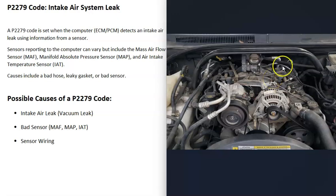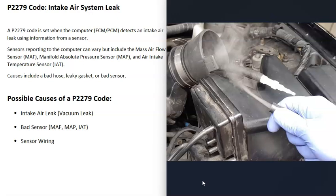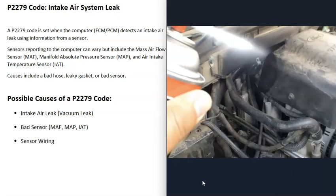You can start troubleshooting by going around and looking to see if you can spot anything broken or leaking. One common method to check for intake air leaks or vacuum leaks is the smoke machine method, where you feed smoke into the air intake and wherever the smoke comes out, you know there's a leak.